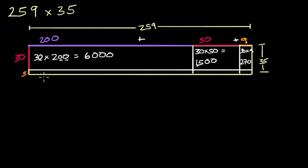And now if I go down here, this little area is going to be, I probably should have drawn it a little bit bigger, but it's going to be 5 times 200, which is equal to 1,000. This one over here is going to be 5 times 50, which is equal to 250. And then last but not least, 5 times 9 is 45.